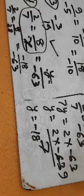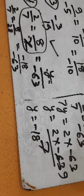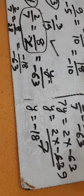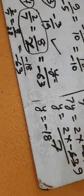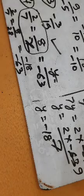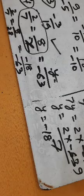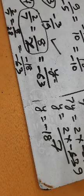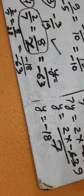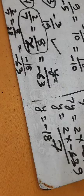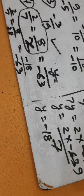Topics covered include absolute value, representation of rational numbers on a number line, and comparing rational numbers. Unit 1 revision is complete.